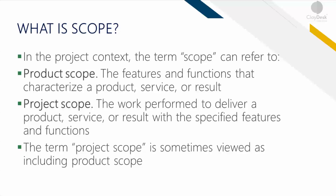In the project context, the term scope can refer to either product or project scope. Product scope means the features and functions that characterize a product, service, or result. Whereas project scope means the work performed to deliver a product, service, or result with the specified features and functions. The term project scope is sometimes viewed as including the product scope as well — just a subtle difference between the two.